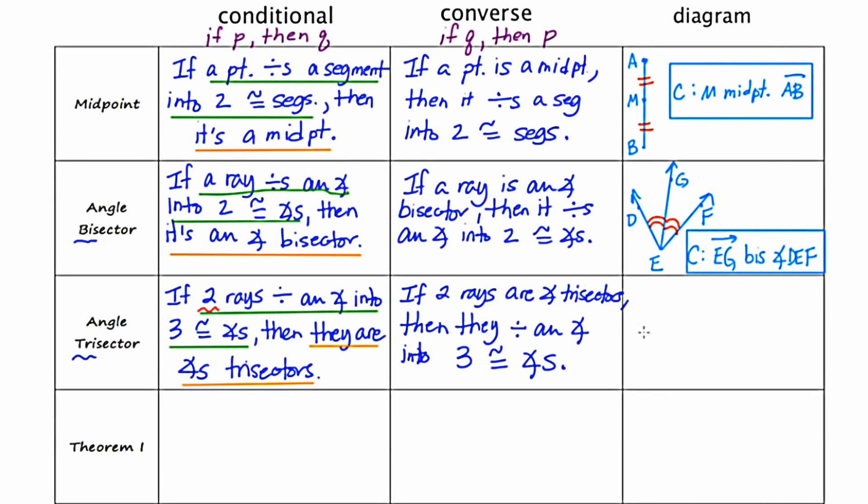Now I'll give an illustration of angle trisectors. We have a very large angle, angle DEF, and there are two rays inside of that angle — ray EM and ray EN. What they do is take that large angle DEF and split it into thirds: three congruent angles, as indicated by the tick marks. So the conclusion here would be that ray EM and ray EN are angle trisectors.